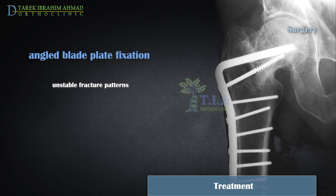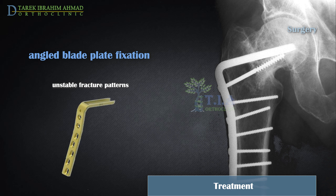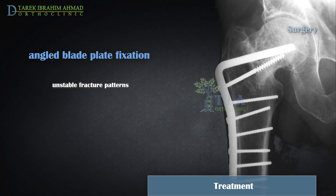Angled blade plates: Fixation of intertrochanteric fractures with a blade plate is superior to fixation with a standard sliding hip screw in an unstable fracture. The angled blade plate is a single-piece, fixed-angle device with a U-shaped blade and side plate secured to the femoral shaft with screws. Some consider blade plates to be relatively technically demanding to place, but with good outcomes in experienced hands. Although they continue to be used, in many centers they have been superseded by intramedullary nails.